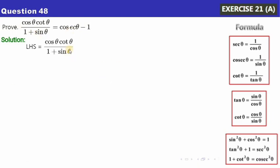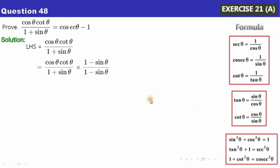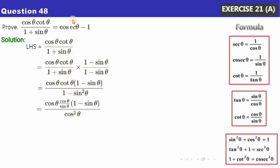For the last question, we need to prove the expression equals cosecθ minus 1. Since cosecθ is 1/sinθ, we need sinθ in the result. We'll multiply both numerator and denominator by (1 minus sinθ). The denominator becomes (1 plus sinθ)(1 minus sinθ) = 1 minus sin²θ = cos²θ. In the numerator, cotθ is written as cosθ/sinθ, so we get cosθ·(cosθ/sinθ) = cos²θ/sinθ.